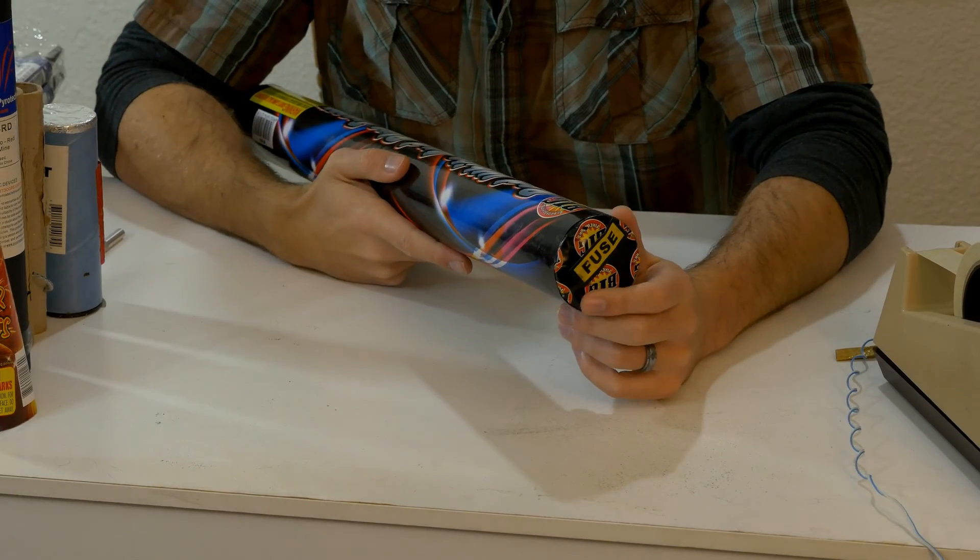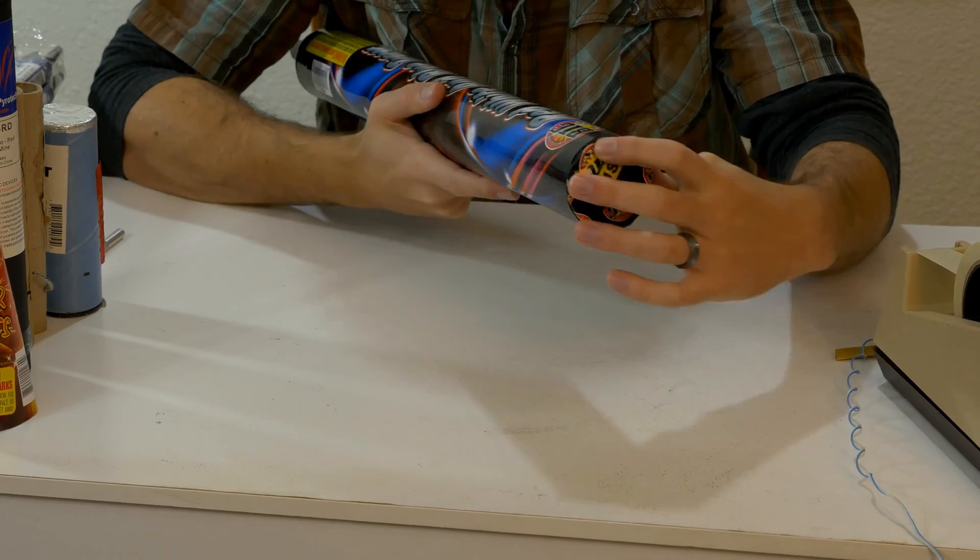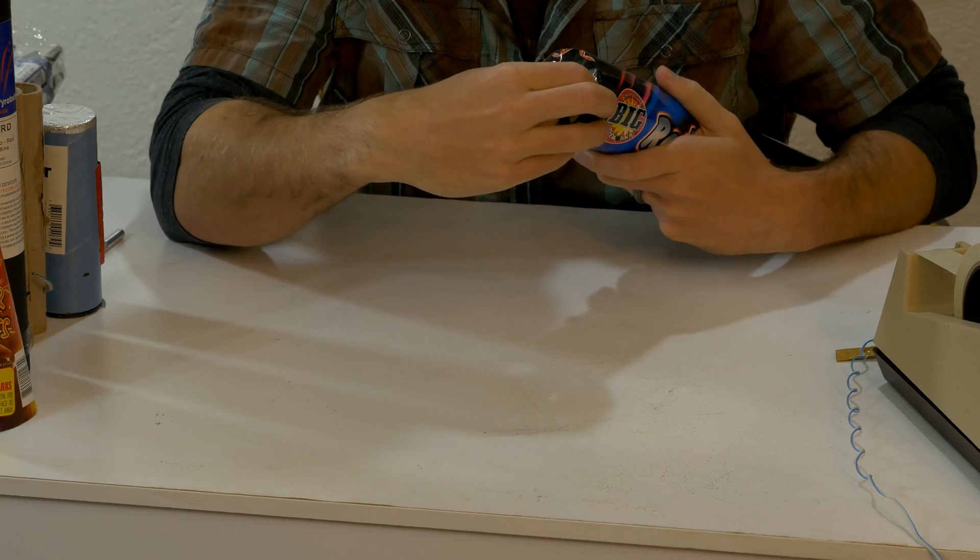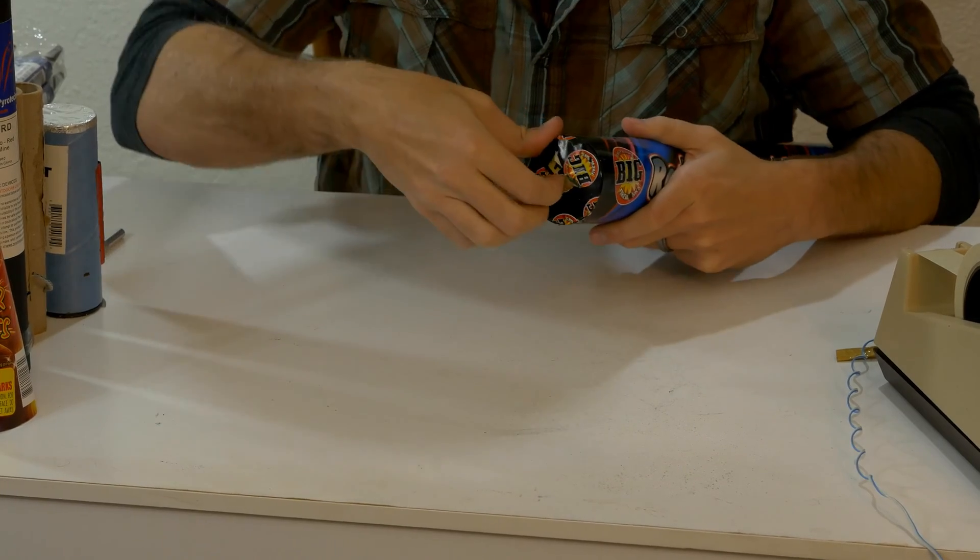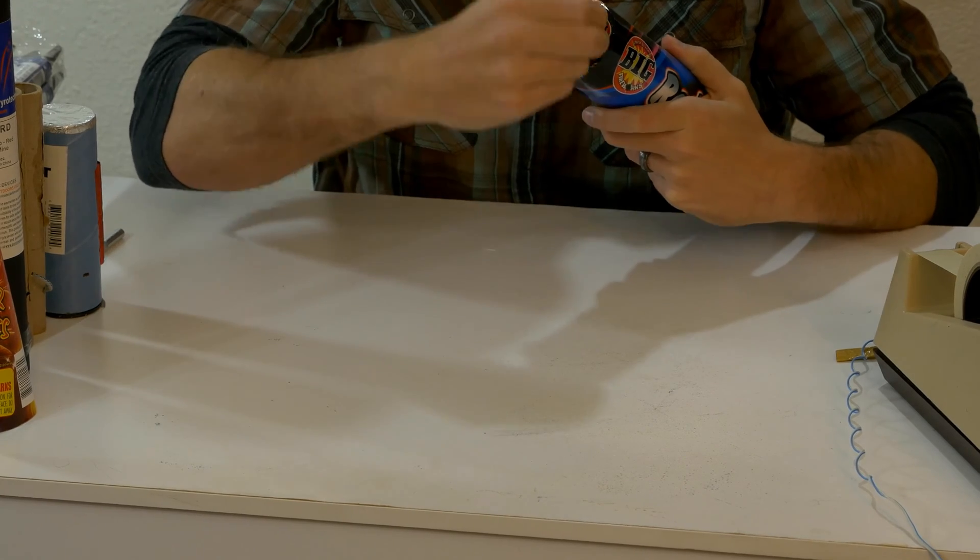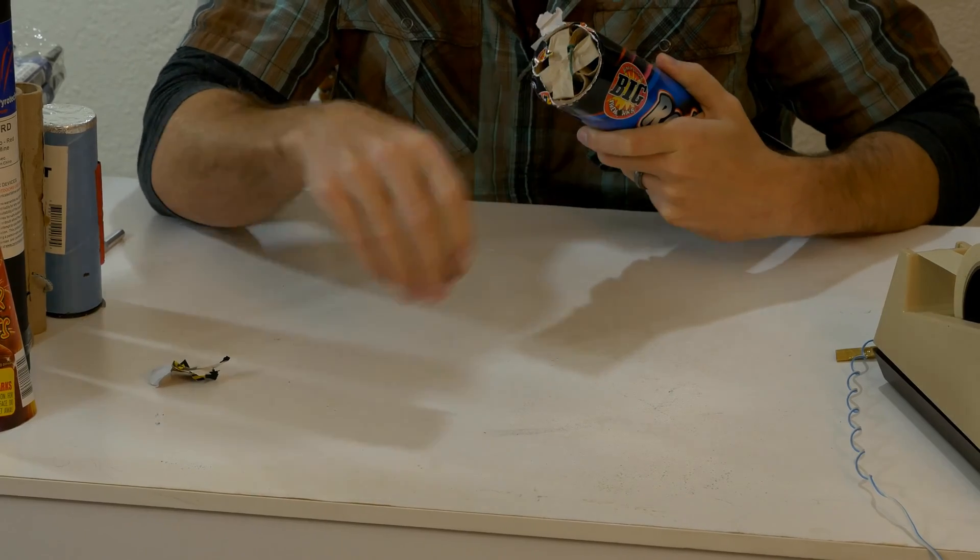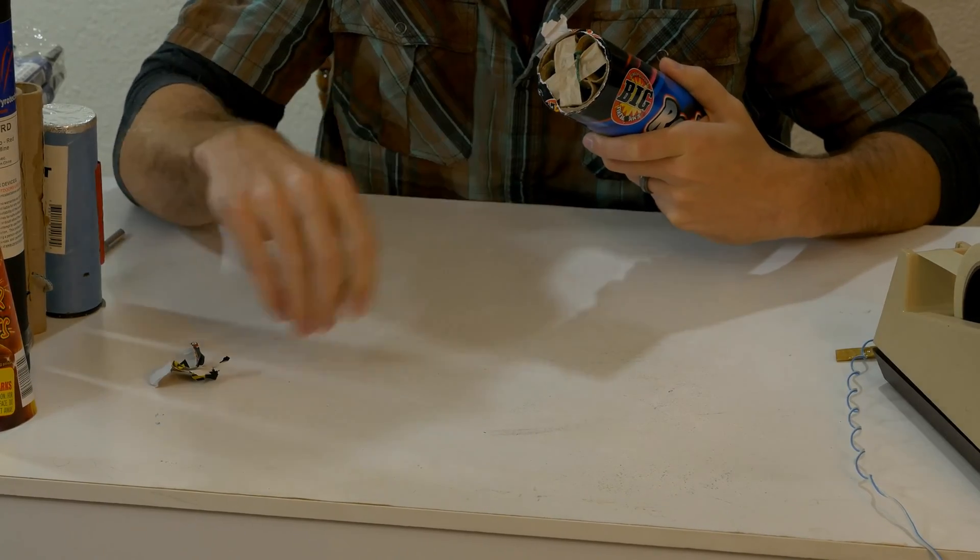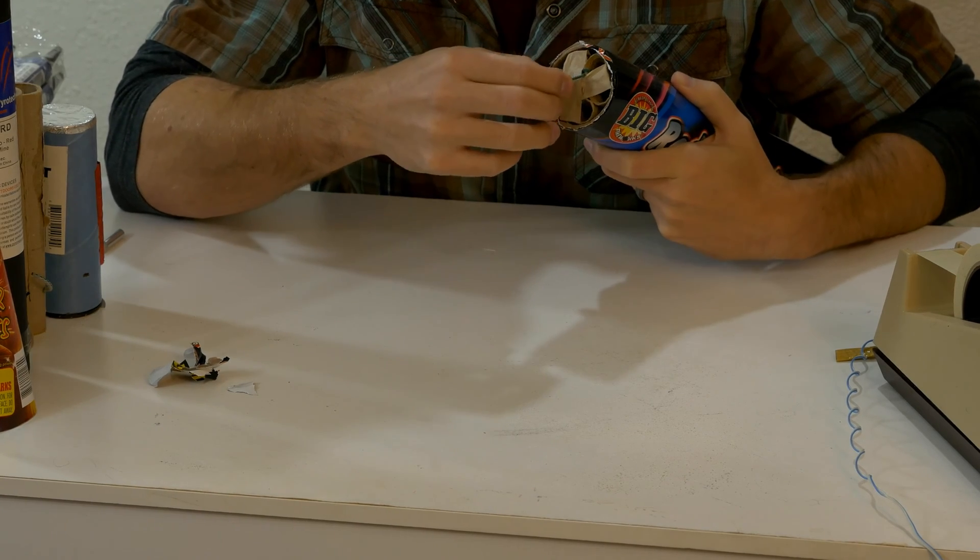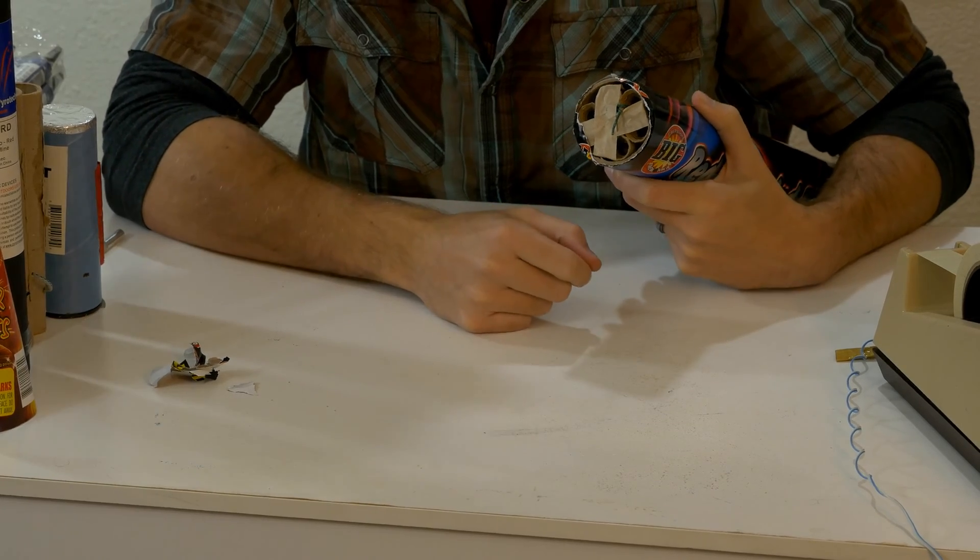Alright, so continuing on with how to match our large size candles. These candles have multiple smaller candles inside them, and this is where you would normally light it if you were just going to light it in your yard or whatnot. So we'll go ahead and peel away some of this paper. And you can see it's just got a little piece of visco there connecting to several of the smaller individual tubes. That's how they get such a high count on there.